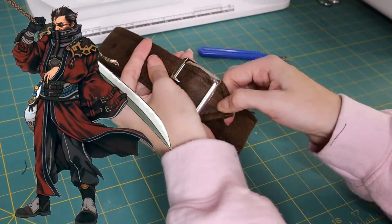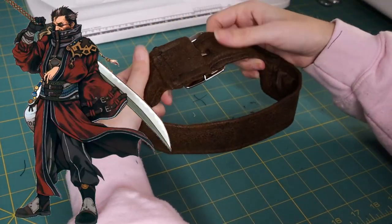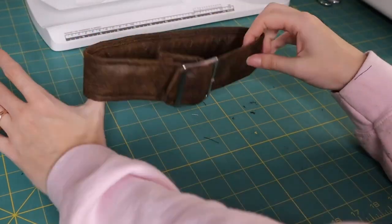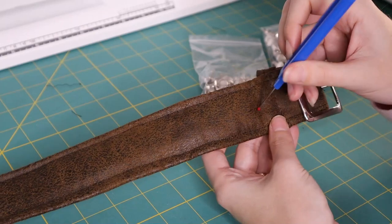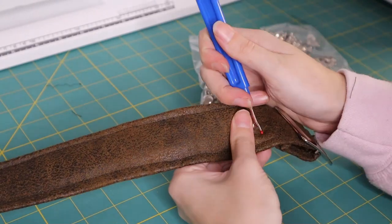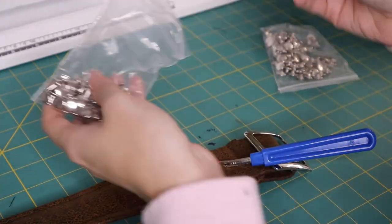And with Final Fantasy cosplays like Auron, there are a lot of decorative things to be done. So I'm going to put in a rivet. This rivet is purely for aesthetics. It's not actually holding anything together.